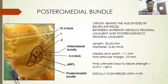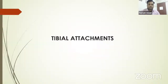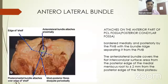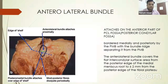Distally, the posteromedial bundle and anterolateral bundle converge, and the anterior meniscofemoral ligament also converges onto the posteromedial bundle. Both bundles attach between the two tibial eminences at their tibial attachments. The anterolateral bundle attaches on the anterior part of the PCL fossa — a flat surface two millimeters behind the shiny white fibers of the medial meniscus.